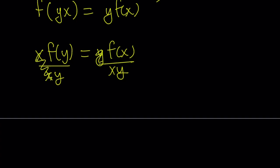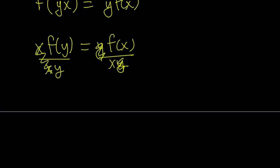Okay. X is going to cancel out. Y is going to cancel out here. And yay, I got something nice. Let me rewrite it because that's not clean. F of x over x equals f of y over y.